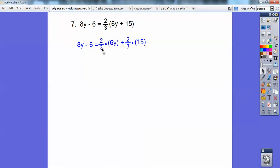So, now I'm going to go 3 goes into 6 2 times, and then this 3 goes into 15 5 times. So, watch what happens here. Now I'm going to go 2 times 2y is 4y. And then 2 times 5 is 10. See what I did? And then I'm going to subtract 4y from both sides.